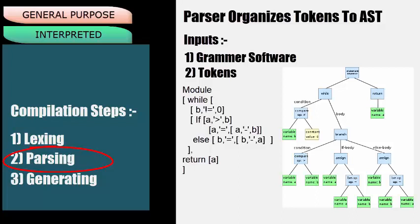Thus, the AST gets organized in stages. It also provides extra information. For example, A has additional information as it is a variable, and 0 with information as a constant.